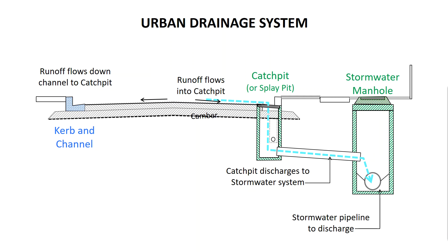This slide shows a traditional urban drainage system. It differs from the rural drainage system in that it has curb and channel and a stormwater system. The road has a camber which causes the surface water to run off the side of the road where it hits the channel in the curb and channel.